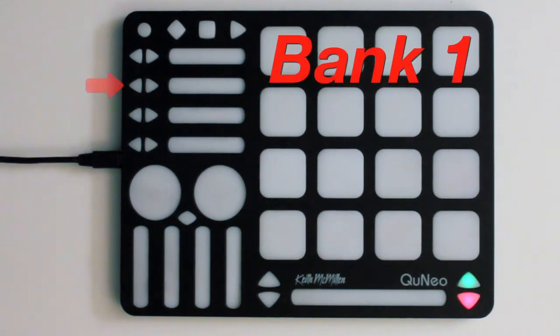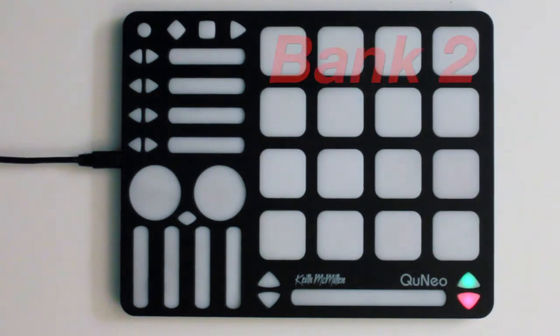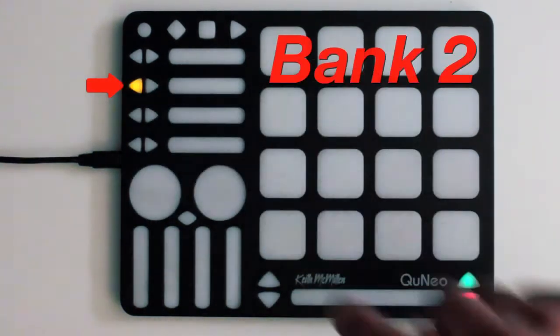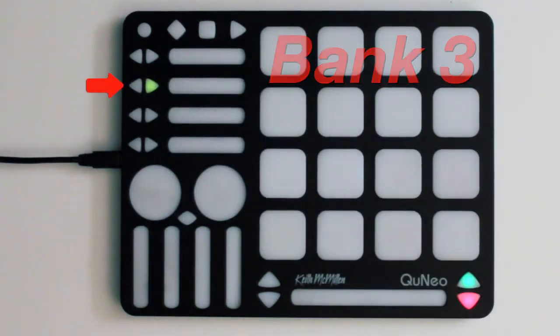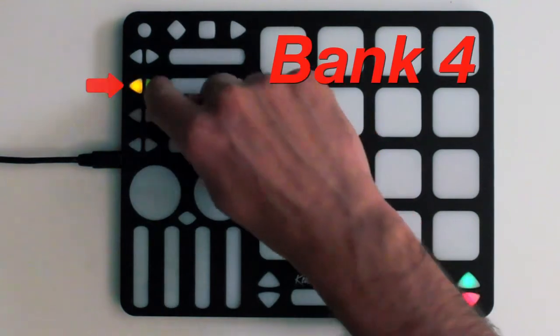In bank 1, the left-right buttons will remain unlit. In bank 2, the left LED will light. In bank 3, the right LED will light. And in bank 4, both buttons will light.